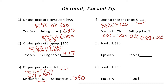The answer is one hundred five dollars and sixty cents. That is the discounted selling price. The next problem is about the tip. The food bill is twenty four dollars and you want to add a twenty percent tip.